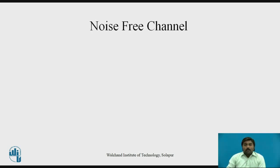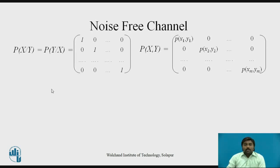The diagonal form refers to the joint probability matrix. Similarly, the conditional probability matrix — probability of x given y or probability of y given x — also has a diagonal form, but with unity values, meaning the conditional probability p(y1|x1) equals 1. So the diagonal elements are 1, and that is why it is called a unity diagonal matrix.